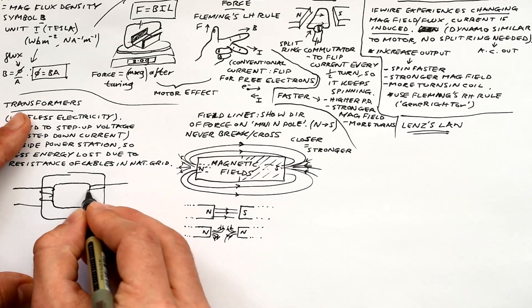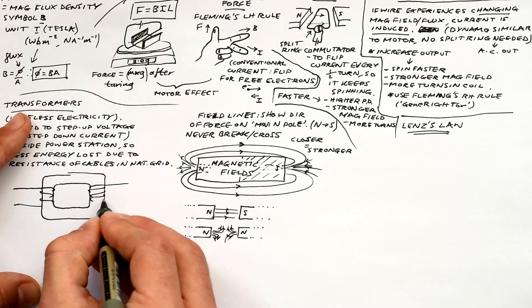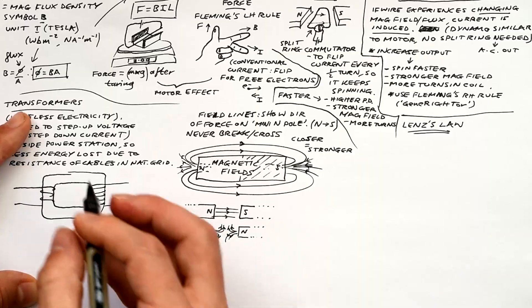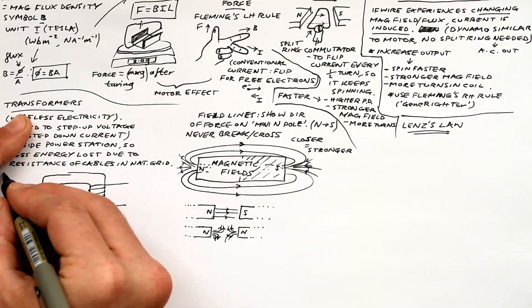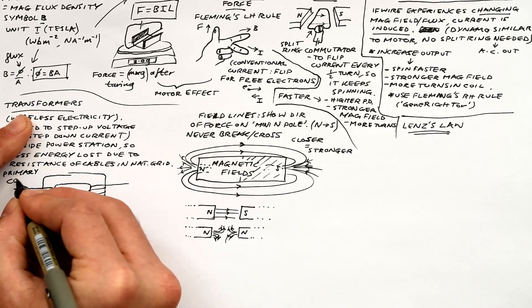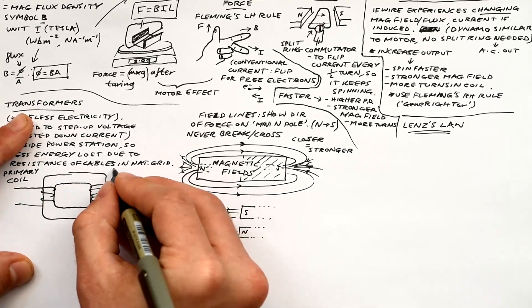Okay, this is your basic transformer. We have a primary coil on one side and a secondary coil on the other side. Then we have this soft iron core in the middle. Just be clear, there should be no electricity in the iron core at all, just in the wires wrapped around it. But there is a magnetic field in the core.